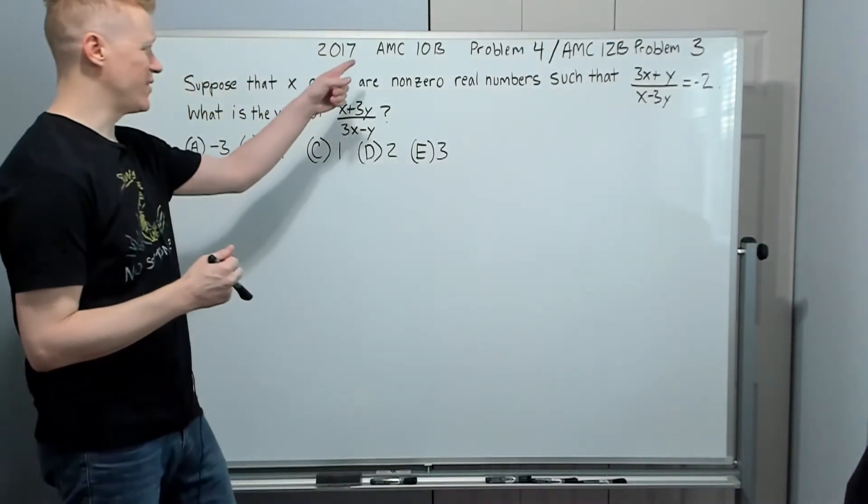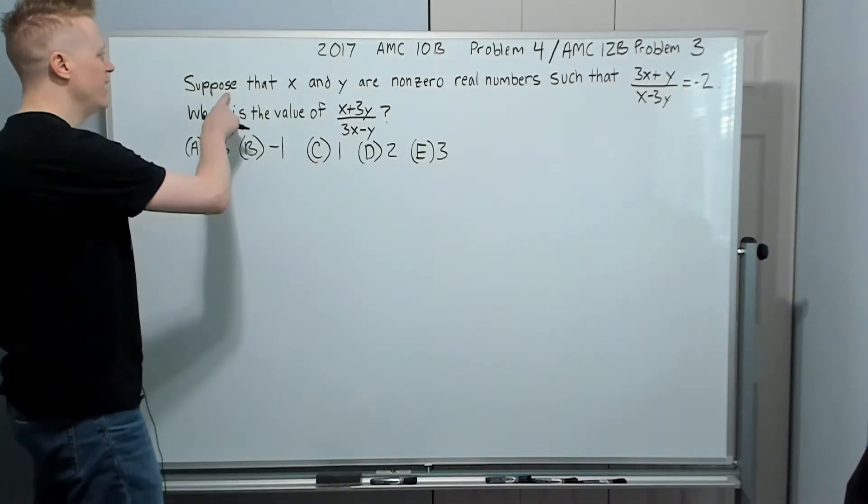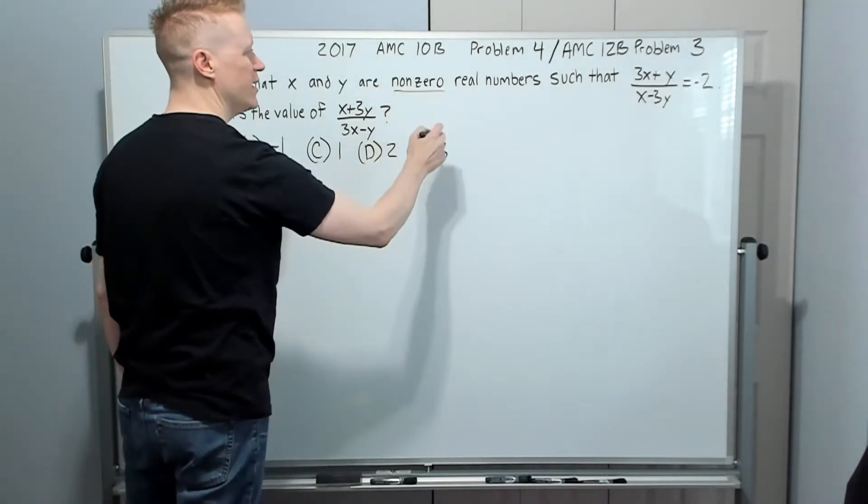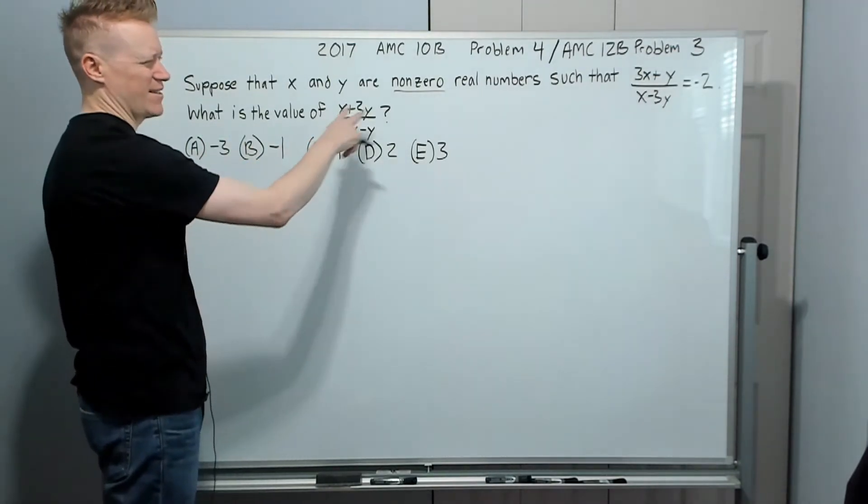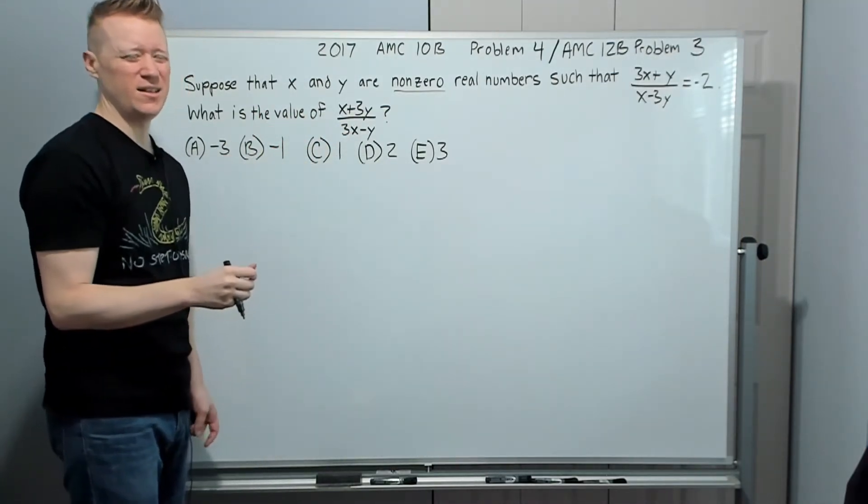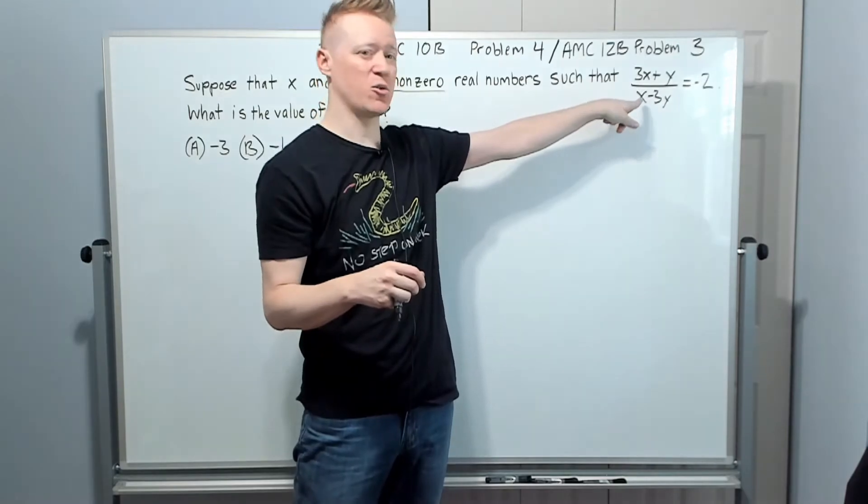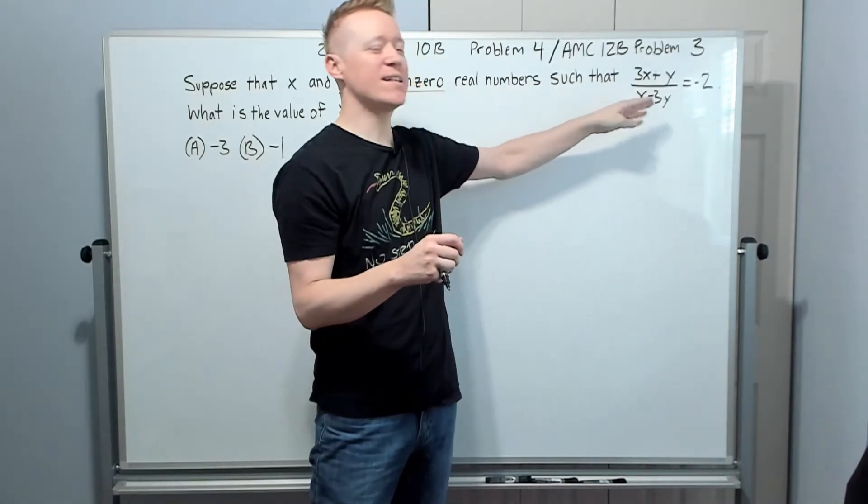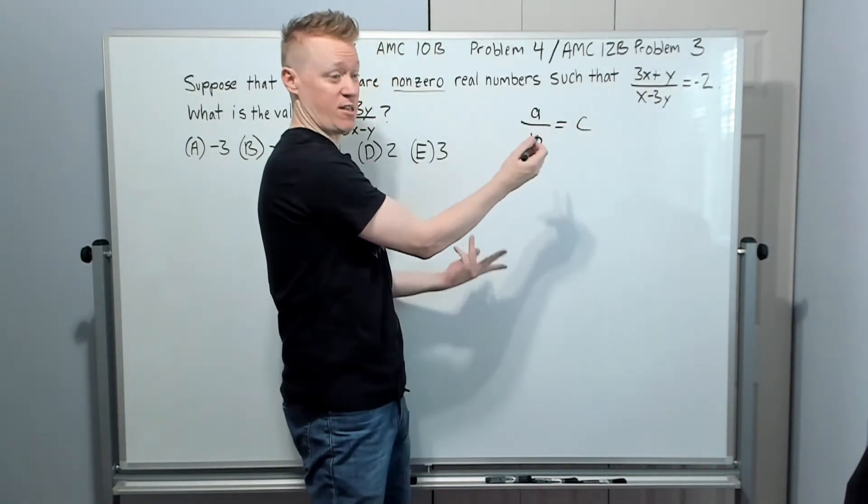All right. Continuing on the 2017 AMC 10B problem four, it was also the 12B problem three. Suppose that X and Y are non-zero real numbers that could be important later, such that that expression is true. What is the value of this expression? They're not the same expression. It's not just switched or anything. What do you do? You just look at this and ask yourself, what's the most logical thing to do? Probably to multiply by the square root of 17.8. No, just kidding. That's a joke. Obviously what you want to do is if you have the situation, a fraction equals something, maybe get rid of the fraction.